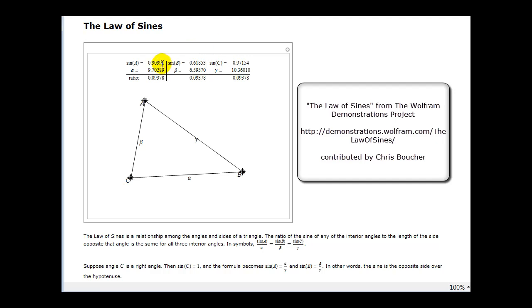Up here in this table, we have the ratios of the sines of the angles divided by the length of the opposite sides. And what we'll notice is when we change the triangle by changing any angle or the length of any side, notice that these ratios remain constant. This is illustrating the property of the law of sines.